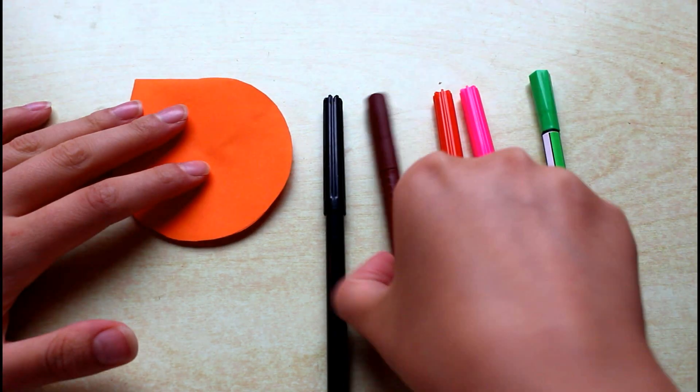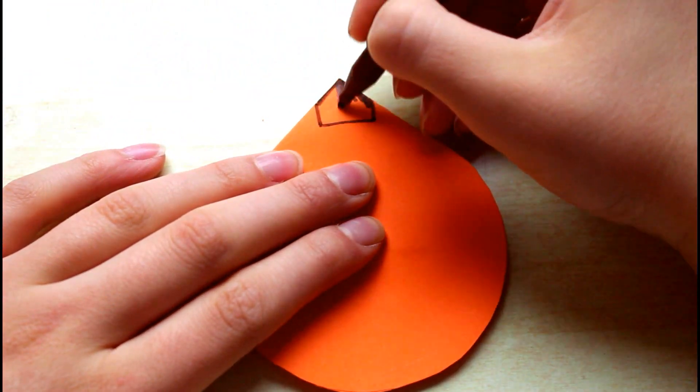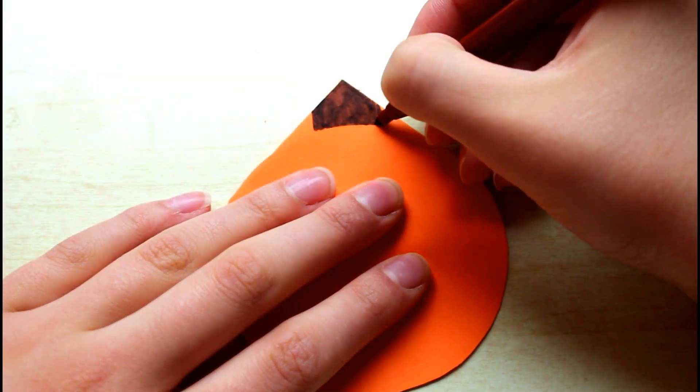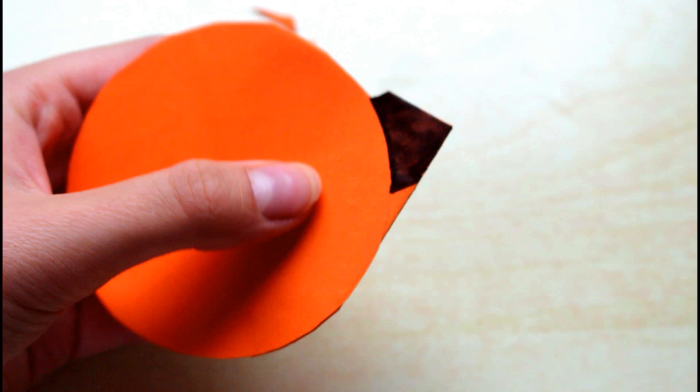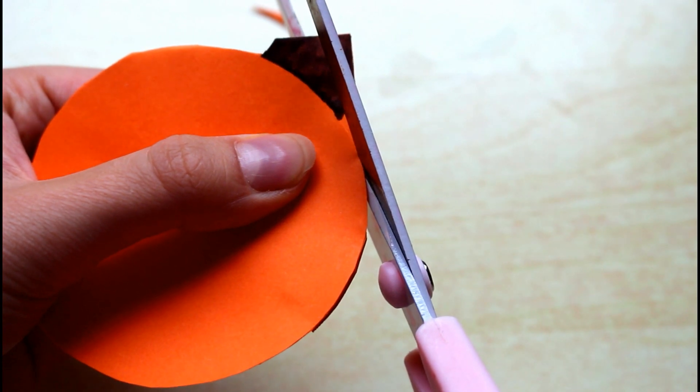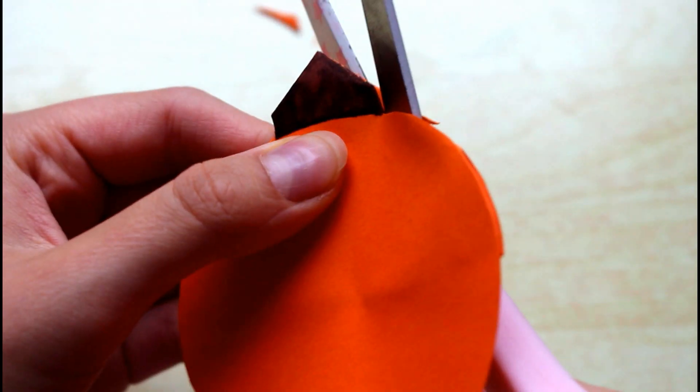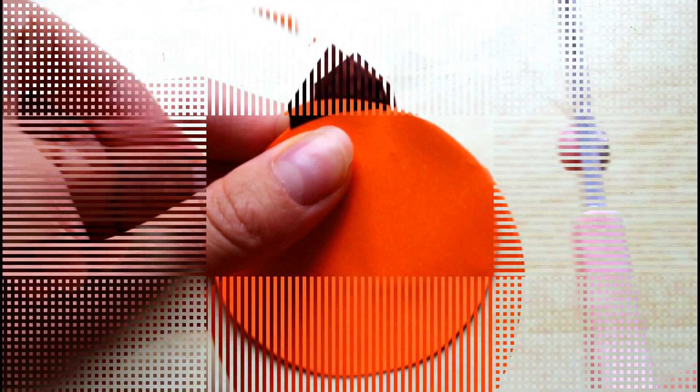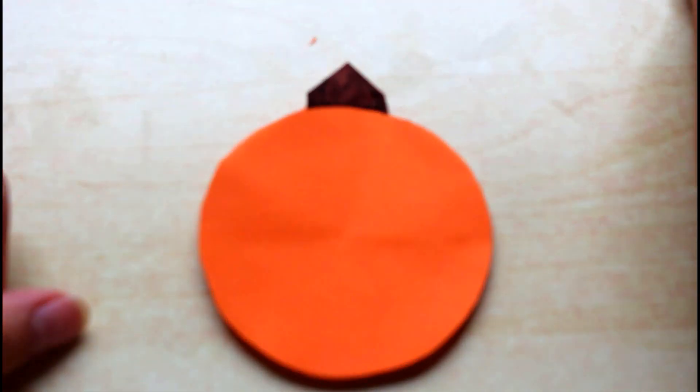Now that's all glued, I'm going to take my pens. I've got black, brown, orange, pink, and green at the moment. Then I'm going to take the brown and just draw on the stem. Is it called a stem? I'm not sure if you call it a stem on a pumpkin. But the top bit of the pumpkin, I'm just going to color that in. Then I'm going to take my scissors and trim away the little excess piece.